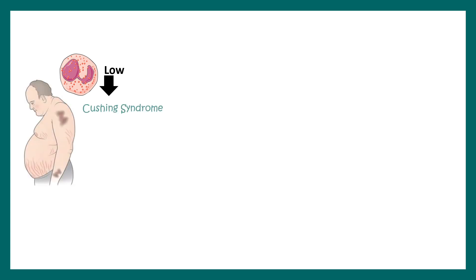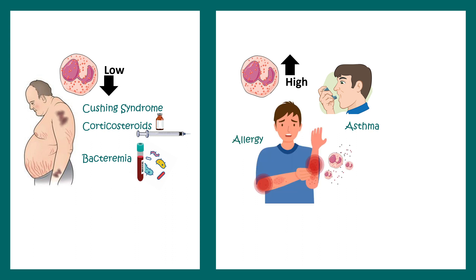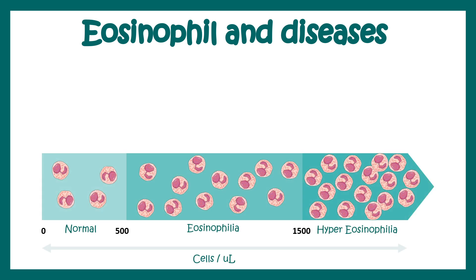Eosinophil levels go down in conditions such as Cushing syndrome, usage of corticosteroids, and bacteremia. Eosinophil levels go up in situations like asthma, allergy, and parasitic infection. The normal number is 0 to 500 cells per microliter; beyond that it is Eosinophilia, and beyond 1500 cells per microliter is classified as hyper-eosinophilia.